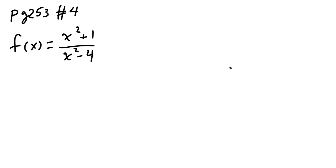Hi guys, I wanted to put a couple of example problems up from your homework on section 4.6, where we're sketching curves using our knowledge from previous years and from calculus. This is number 4 on page 253. I'm given f of x equals x squared plus 1 over x squared minus 4.